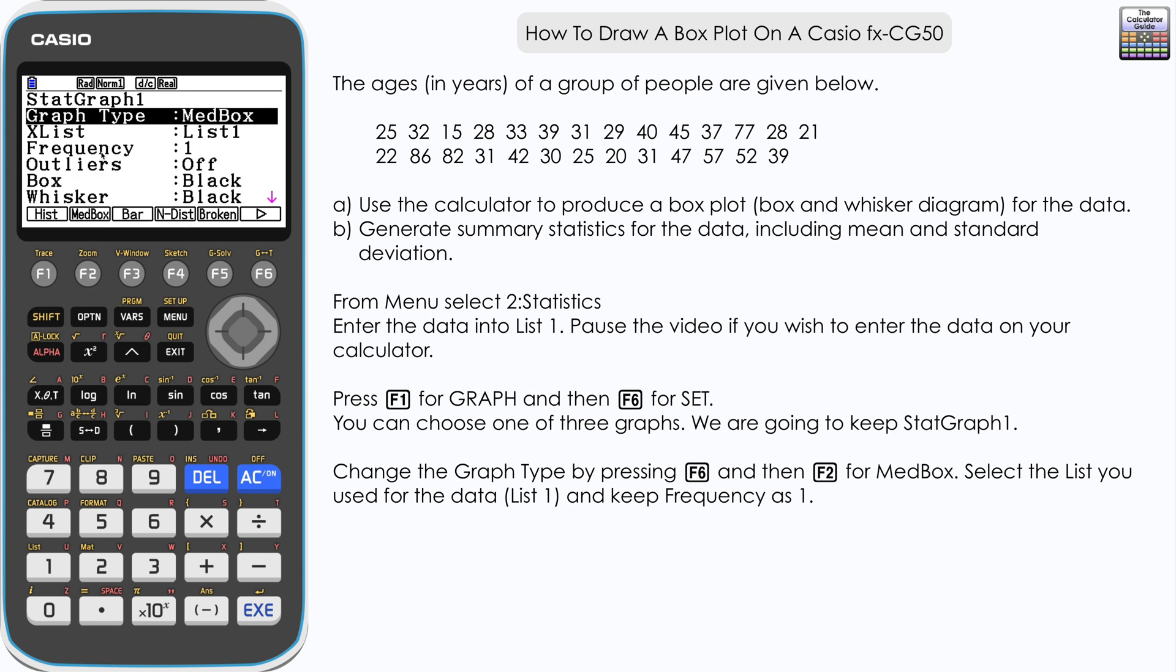You can see that the options here have changed. XList, which just means the list with the data or our variable, is List 1. So that was the list that we entered the data into. If you've got a different list, then you need to change that at this stage. And as we're just using one variable, the frequency should be 1. We've got one of each of those.